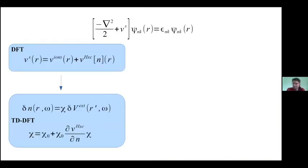Let me start with a few equations. When we want to describe the properties of a material from first principles, we usually start from a single-particle equation in the framework of density functional theory, where we have an external potential for the electrons due to the ions, and then a local exchange and correlation term which takes into account electron-electron interaction. From that, we can also describe the response of the system to an external perturbation, and in particular the response function in time-dependent density functional theory.